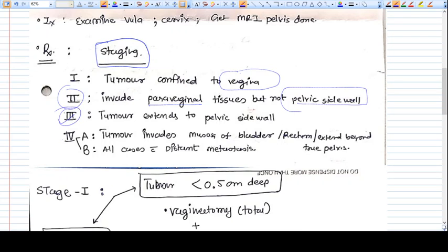Third stage is tumor extends to pelvic side wall. Fourth stage is beyond pelvic side wall - tumor invades bladder, rectum, beyond pelvis. 4A involves adjacent structures, and 4B includes all cases of distant metastasis.